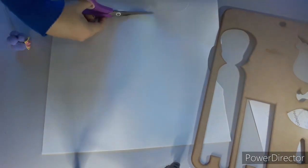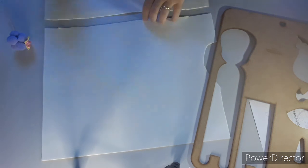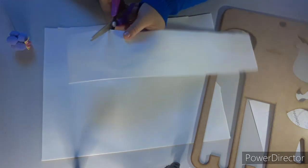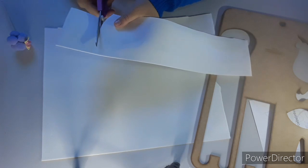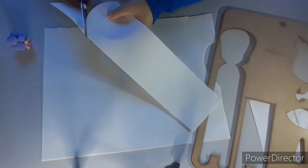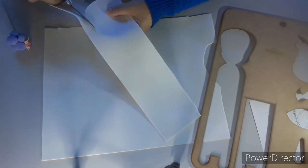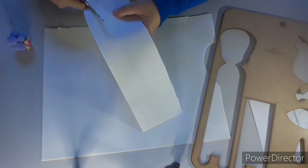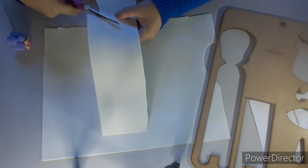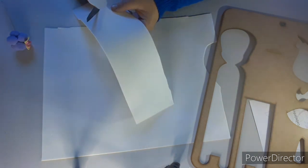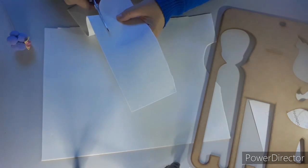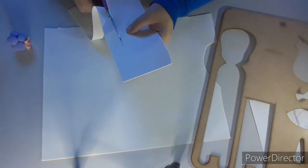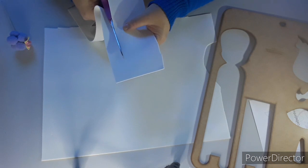Nós vamos pegar, recortar essa parte. É muito simples, tá vendo? A tesoura sempre retinha. Deixar o EVA ir na tesoura. Não fechar a tesoura até o final, pra não ficar picotado.